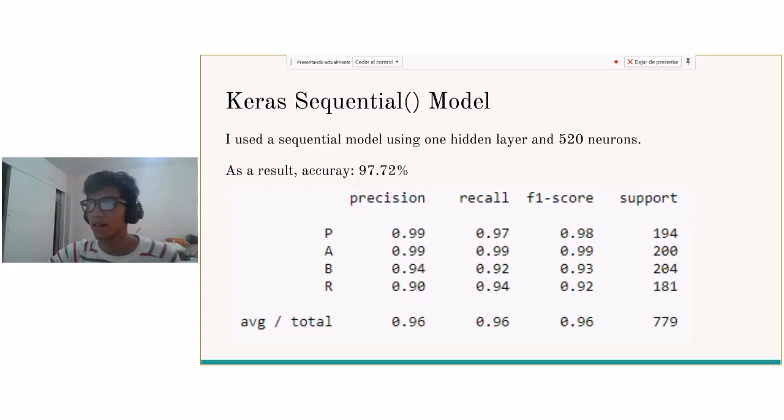The input layer and the hidden layer both have 520 neurons. The output layer has 4 neurons. And the result of this is that I achieved a 97% of accuracy, almost 98.